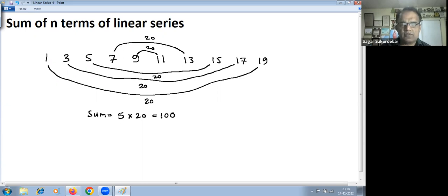So to generalize this, what you should note here: 5 refers to 10 divided by 2. 10 here refers to number of terms here, 10 terms here. And this 20 you get by adding first number with the last number.